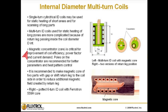Poles on the concentrator are recommended for better parameters and heat pattern control. It is recommended to make the magnetic core of two parts with a gap, or to shift the return leg to the coil side, in order to reduce the additional magnetic field created by the return leg. To the right, we see a potted six-turn ID coil with a Ferrotron 559H core.